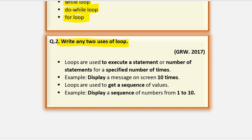Write any two uses of a loop. The first use is when we have to repeat statements multiple times. For example, displaying a message on screen ten times, a hundred times, a thousand times, or any number of times — in this situation we use a loop. The second use is when we have to get a sequence of values, for example displaying a sequence of numbers from one to ten, one to hundred, or one to thousand — in this situation, we use loops.